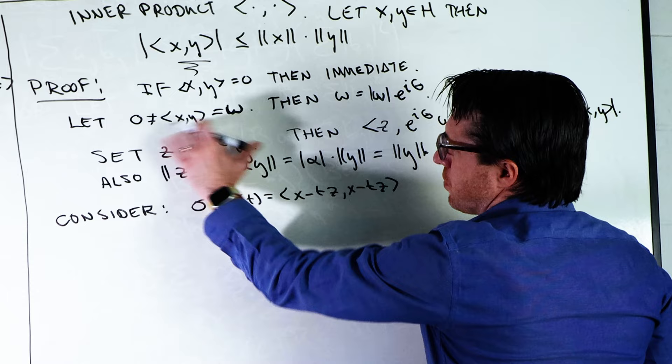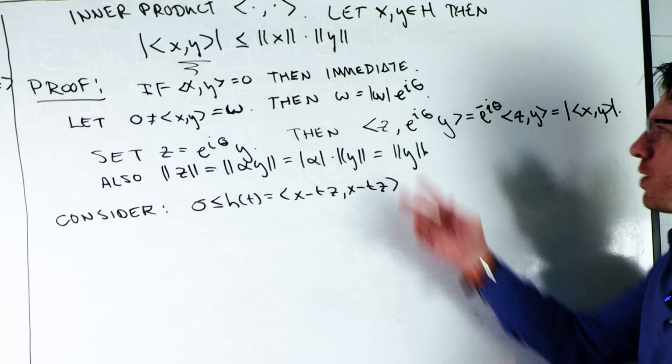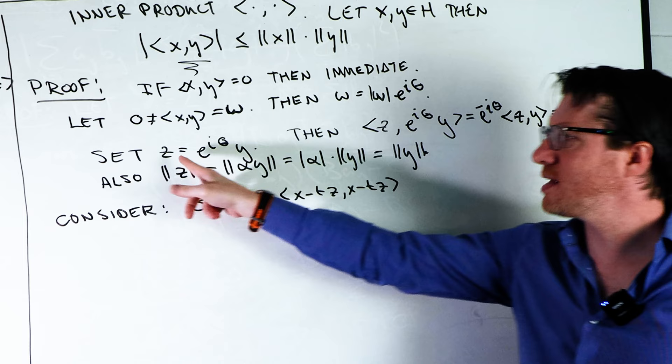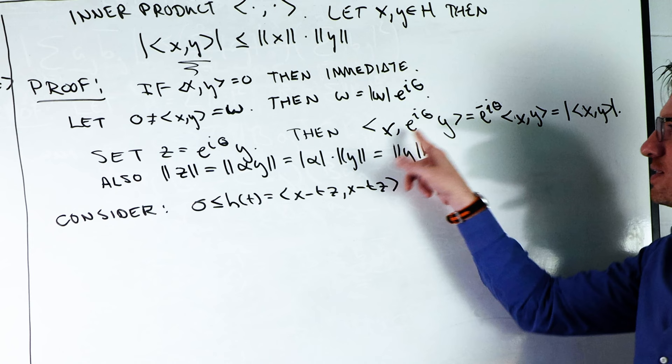Otherwise, we're going to let this inner product be equal to some complex number w. This complex number can then be written in terms of its polar form, where you have the magnitude times a direction, e^(iθ). We're going to take this e^(iθ), slap it onto y, and make this z term.